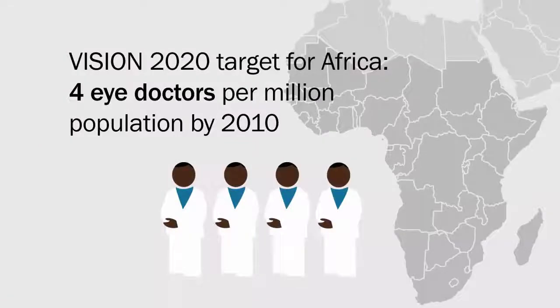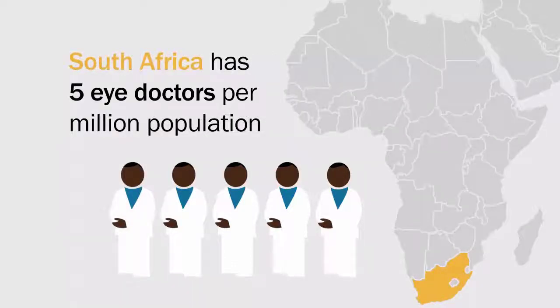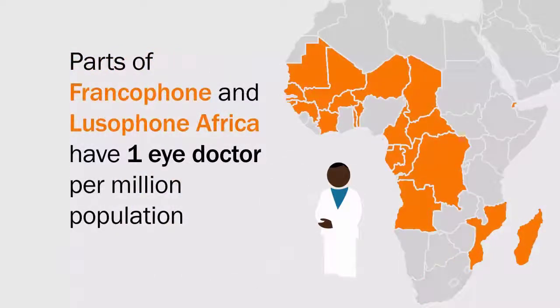The Vision 2020 initiative set a target of 4 eye doctors per million population for Africa by 2010, but this has not been achieved in all regions. It is also very low compared to other areas — India and China have between 10 and 20 eye doctors per million population. Within Africa, the numbers vary from 5 per million in South Africa to less than 1 per million in some francophone and lusophone countries. The distribution of eye doctors is also a challenge, as most work within cities despite the bigger population and need being in rural settings.